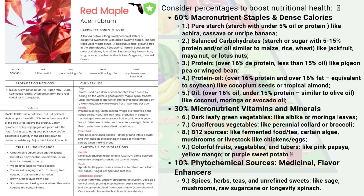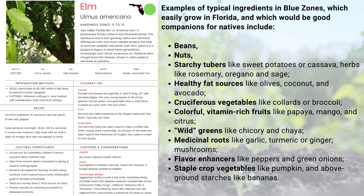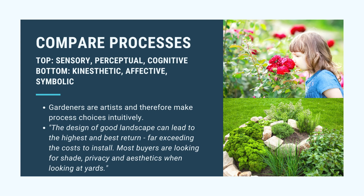Our native red maple does yield sap. By thinking about your food forest in three categories — macronutrients, micronutrients, and phytochemicals — you'll be able to live off your yard. Something like sugar is more of a phytonutrient type thing. Elm trees have high edibility as well. Things like beans, nuts, starchy tubers, healthy fats, and cruciferous vegetables are the foundation of a healthy diet according to the Blue Zones research.